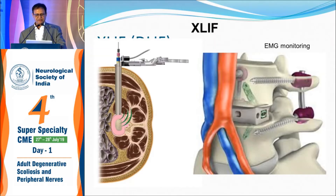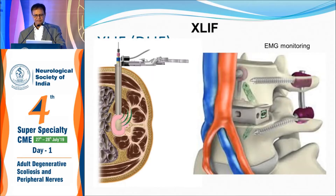In XLIF, one goes directly through the psoas muscle, but must know exactly where the lumbar plexus is to avoid damage, as the chances of damaging the lumbar plexus are higher through the trans-psoas approach. One also has to always supplement with a posterior approach. So in ALIF, it becomes a two-stage surgery — first anterior, then posterior — whereas with a posterior approach, both anterior and posterior fusion can be done posteriorly only.